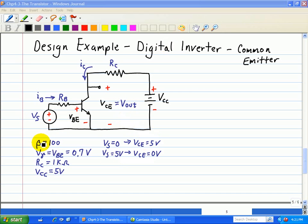We're also given the following parameters: our current gain beta is equal to 100, V gamma is equal to Vbe which is equal to 0.7 volts, so the voltage across this junction between the base and the emitter.